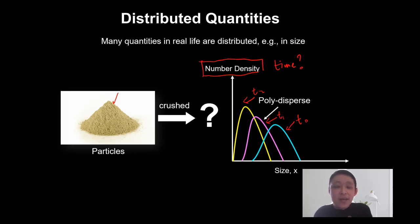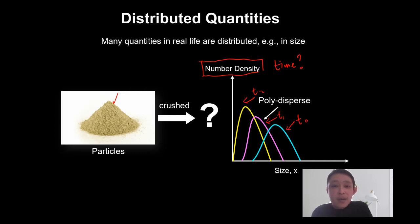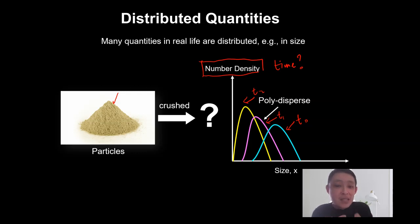When we try to track the temporal evolution or the transient of this number density, what techniques can we use to model this behavior? In many real-life applications, the distribution matters. For example, in milling it's important to control the size distribution, or in pharmaceutical processes where you are producing drug crystals, the size distribution of the crystals is very important. Modeling — specifically population balance modeling — can help us model the distribution or number density with time.